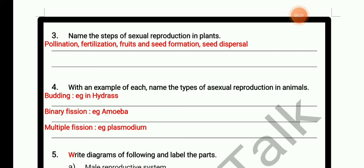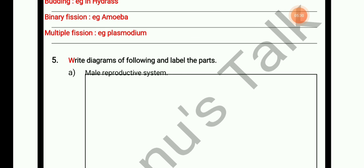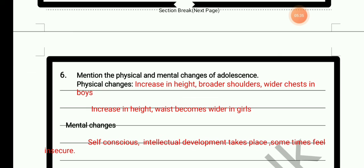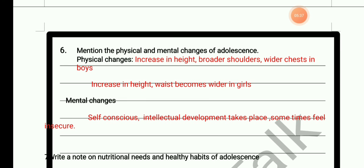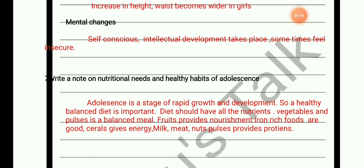Binary fission example: amoeba. Multiple fission example: plasmodium. Draw and label diagrams with the help of the textbook. Mention the physical and mental changes of adolescence. Write a note on nutritional needs and healthy habits of adolescence.